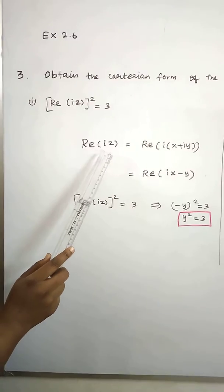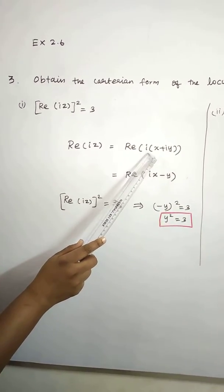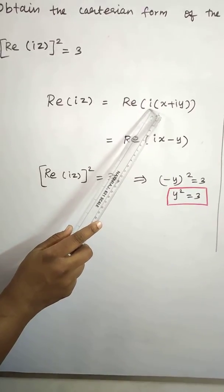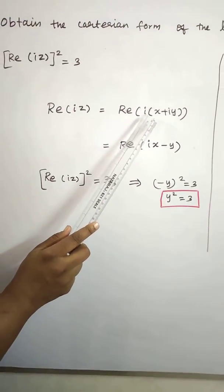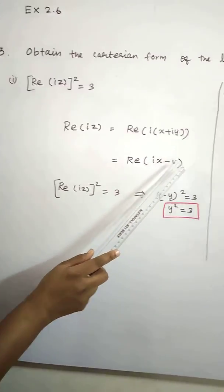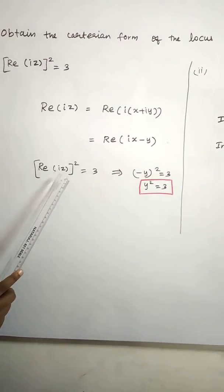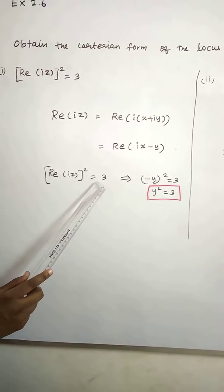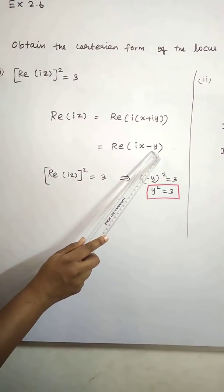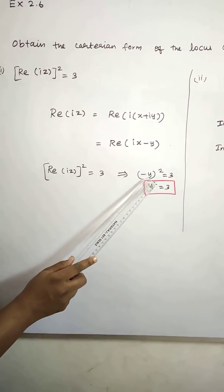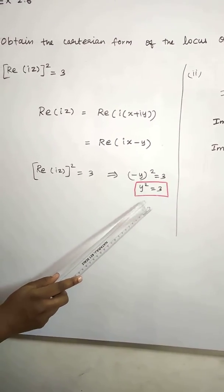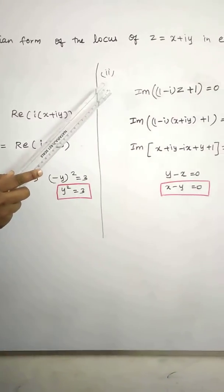Real part of i into z: substitute z equals x plus iy. So i into x plus iy gives ix plus i squared y. Since i squared equals minus 1, this becomes ix minus y. So the real part is minus y. Therefore, real part of iz squared equals 3 implies minus y squared equals 3, so y squared equals 3.